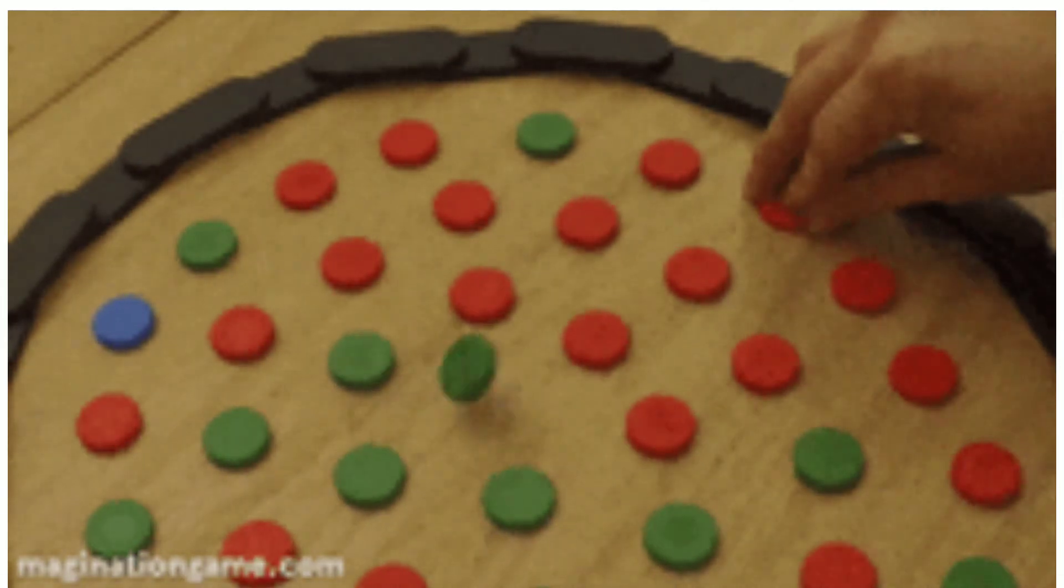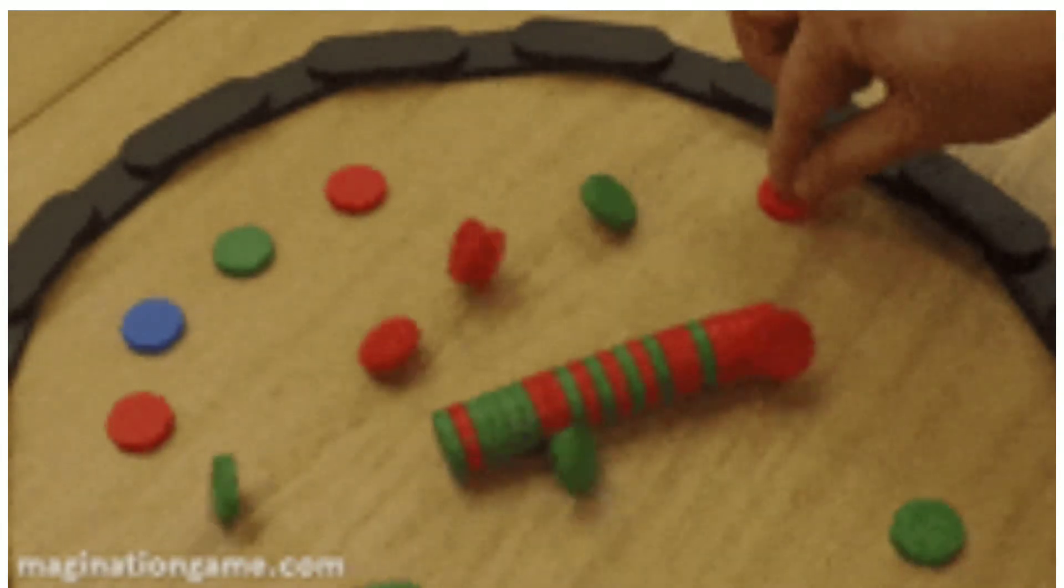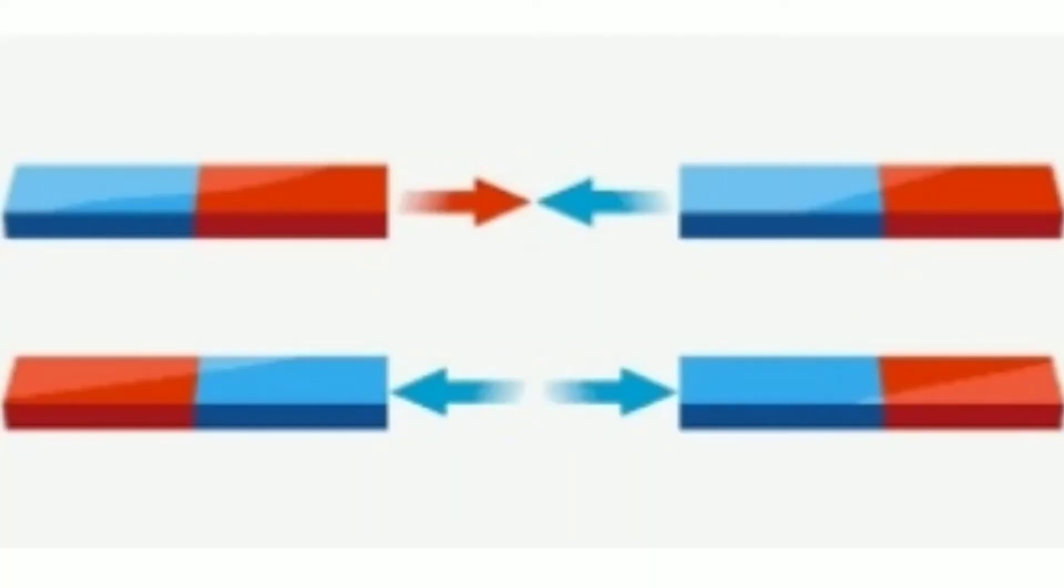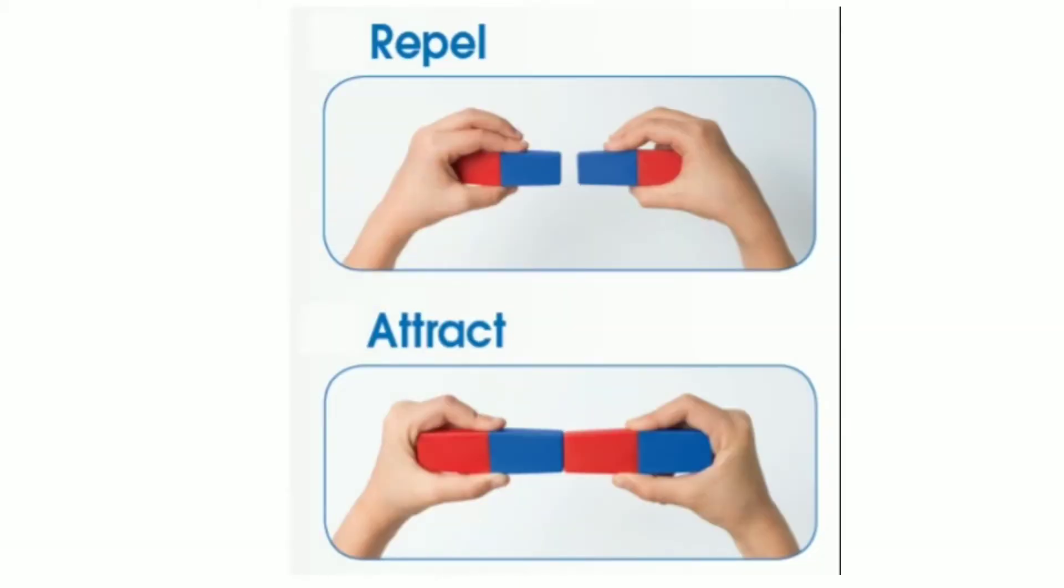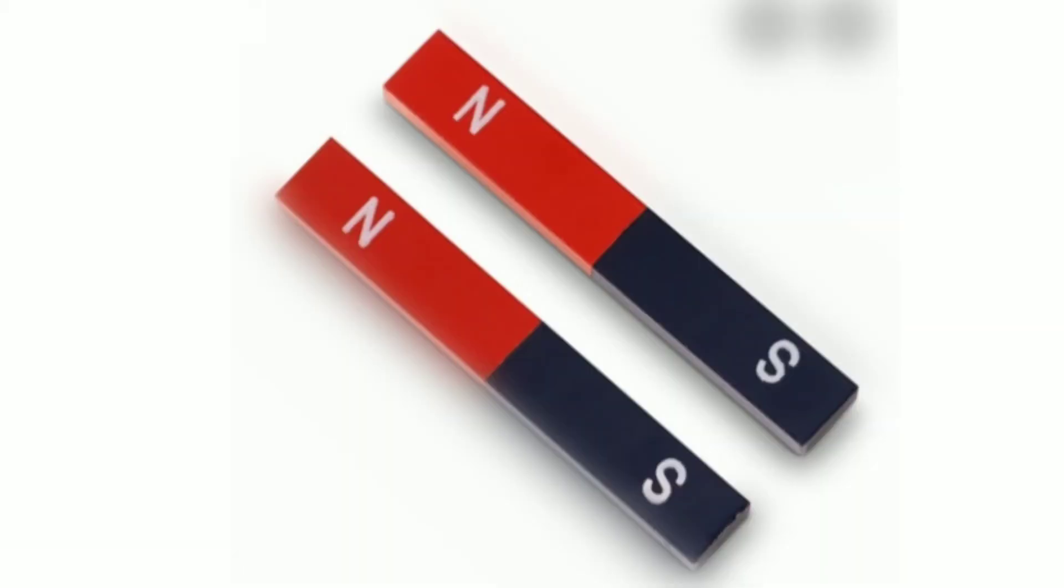Magnets are naughty. They don't always stick with each other. When they meet their enemies, they repel. Each magnet has two sides. The north pole and the south pole.